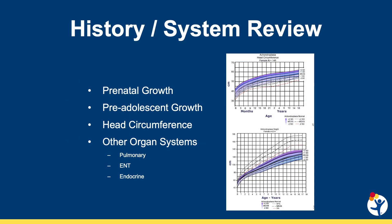When considering skeletal dysplasia in the workup of a child with short stature, one must always do a thorough history and systems review. Questions such as: is there prenatal growth retardation, or is there preadolescent growth retardation? One should measure head circumference, as many skeletal dysplasias present with macrocephaly. Other organ systems may be involved, including restrictive lung disease, abnormalities of the ear, nose, and throat systems, and endocrine differences.